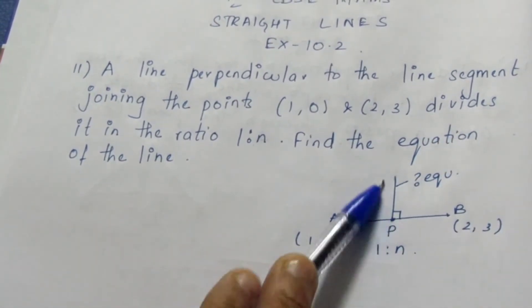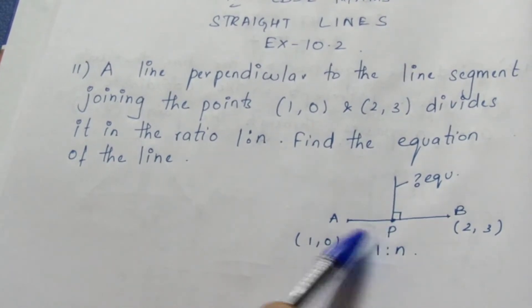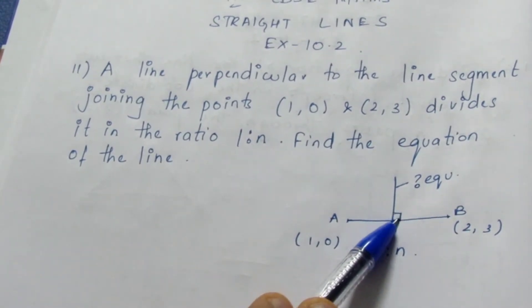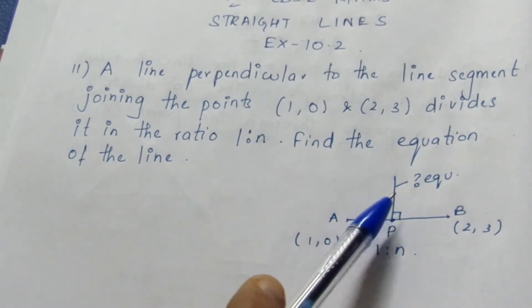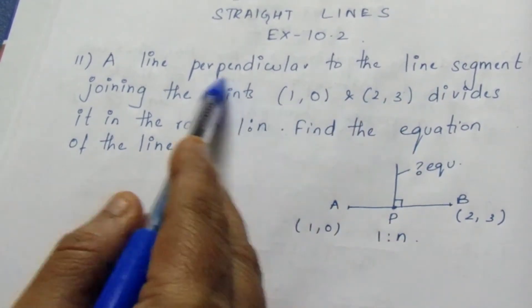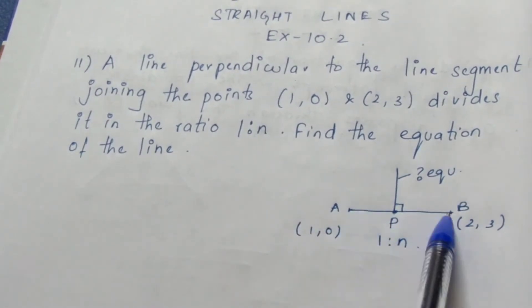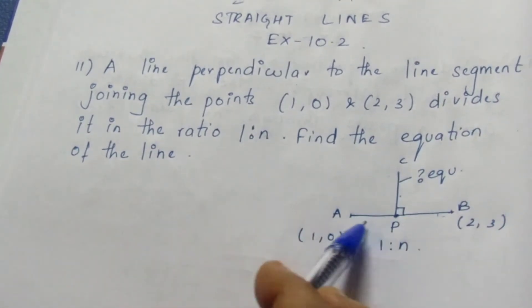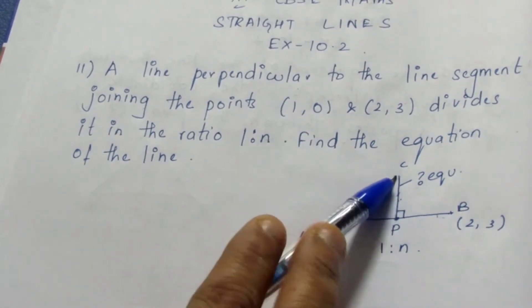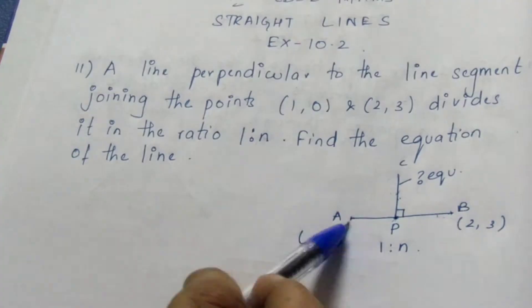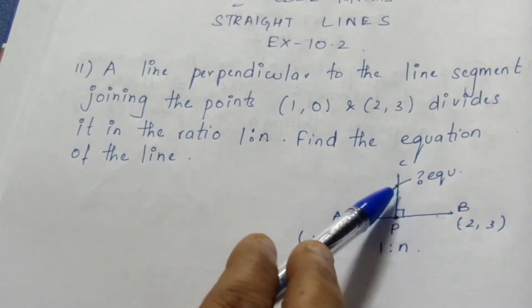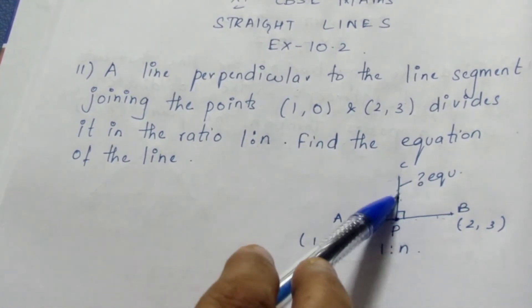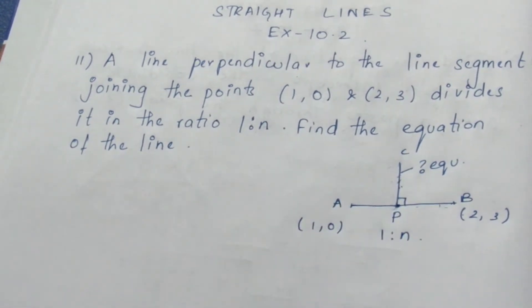Now what do you know about this line? We don't know anything, but we know that we can find point P using the ratio formula of AB. I can find point P, and the given hint here is that it is perpendicular. As I said before, if you see the word perpendicular, think of the slope. So if we find the slope of AB, we can also find the slope of PC using M1 times M2 equals minus 1.